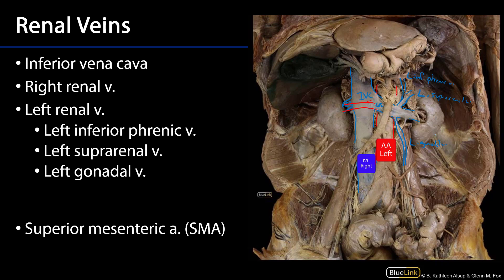All of these branches on the right side — the right inferior phrenic vein, the right suprarenal vein, and the right gonadal vein — all drain directly into the inferior vena cava. And this asymmetry sets the stage for left renal vein entrapment syndrome.